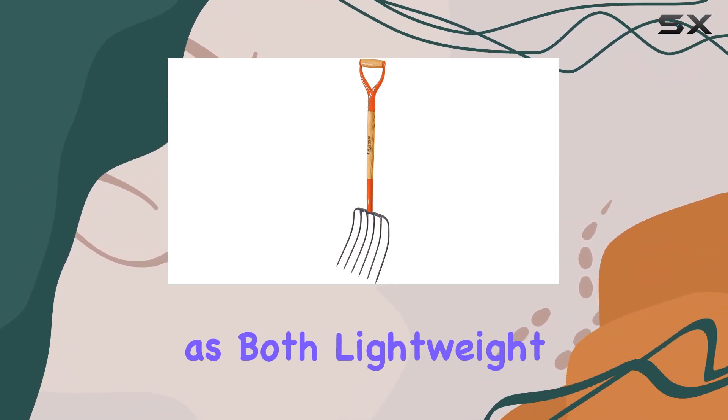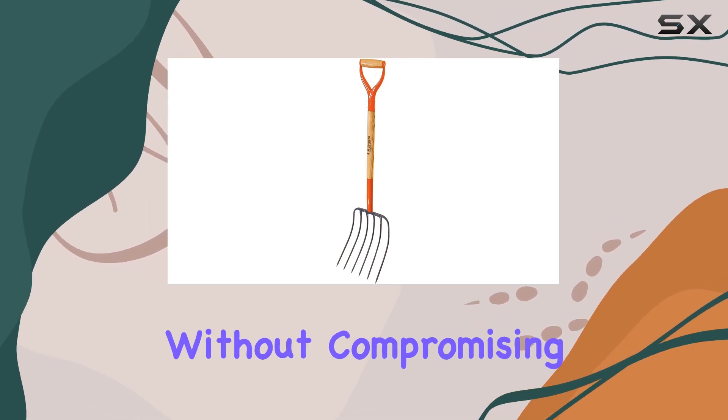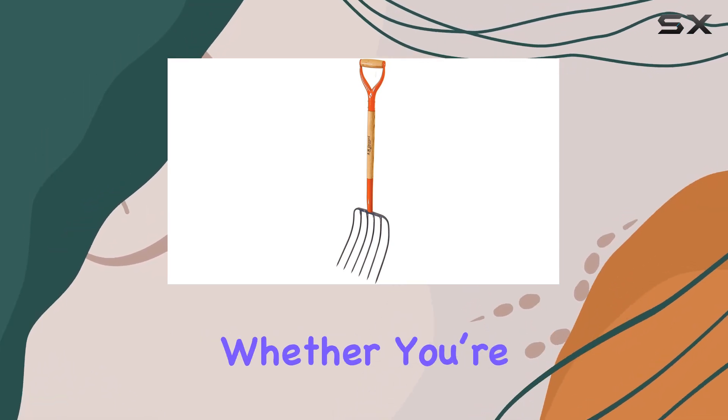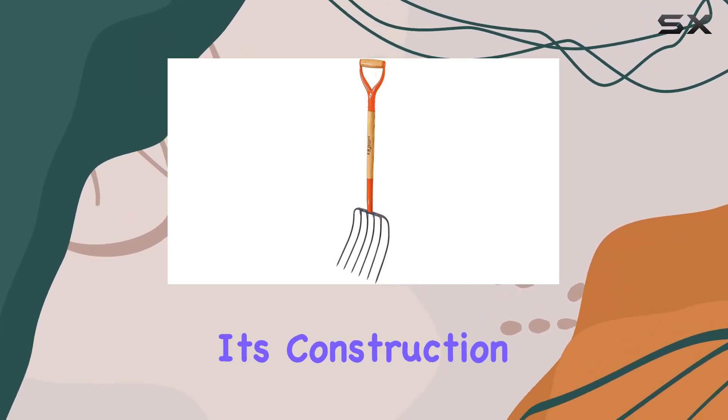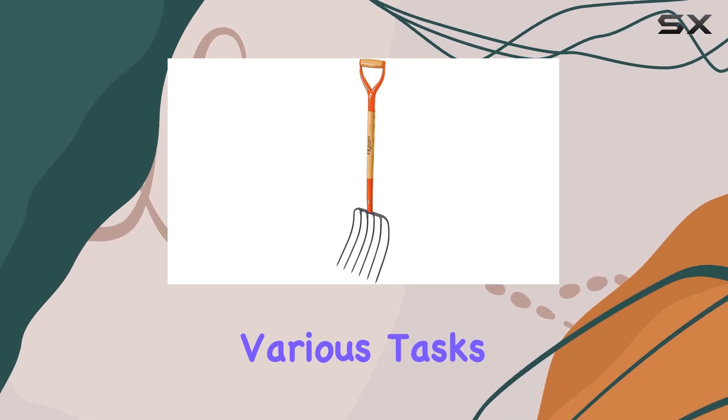Weighing in as both lightweight and sturdy, this manure fork stands up to tough conditions without compromising on ease of use. Whether you're dealing with dense compost or loose straw, its construction ensures that it performs reliably across various tasks.